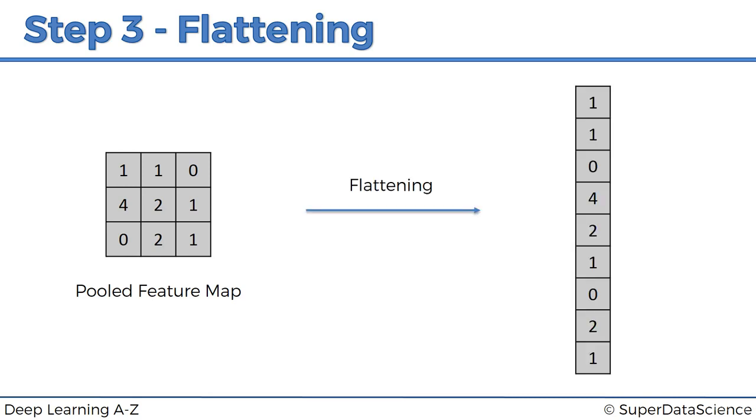Well, we're going to take it and flatten it into a column. So basically just take the numbers row by row and put them into this one long column. The reason for that is because we want to later input this into an artificial neural network for further processing.